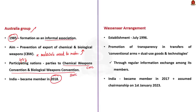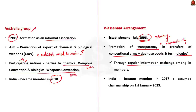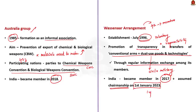The Wassenaar Arrangement was established in July 1996. It is a voluntary export control regime that aims to promote transparency and greater responsibility in transfers of conventional arms and dual-use goods and technologies through regular information exchange among its members. Dual-use goods means software and technology that can be used for both civilian and military applications. Currently, 42 countries are members. India became a member in 2017 and assumed the chairmanship of the Wassenaar Arrangement on 1st January 2023 for a period of one year.